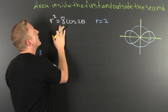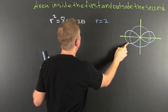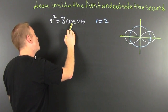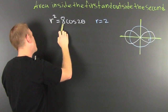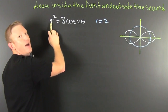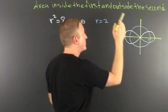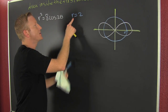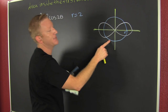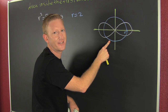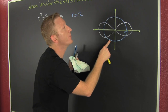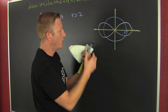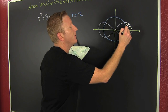Our first function is a lemniscate — that's the white one over here. When theta is 0, cosine of 0 is 1, so r squared is 8, meaning r is the square root of 8, or 2 root 2. That puts it right over here. The second is a circle. What are we looking for? We're looking for the area inside the first and outside the second — this area right here.